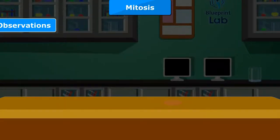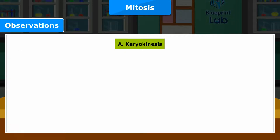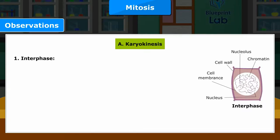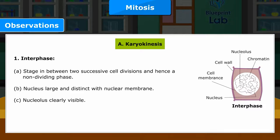Observations: Various stages of mitosis in plant cells are observed. Karyokinesis — 1. Interphase: A. Stage in between two successive cell divisions and hence a non-dividing phase. B. Nucleus large and distinct with nuclear membrane. C. Nucleolus clearly visible. D. Nucleus contains chromatin network.